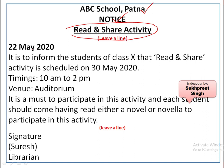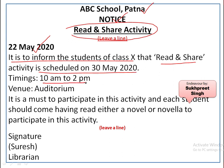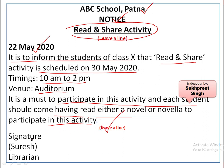Then leave a line, put the date: 22 May 2020. The content reads: It is to inform the students of class 10 that Read and Share Activity is scheduled on 30th May 2020, timings 10 a.m. to 2 p.m., venue: auditorium. It is a must to participate in this activity and each student should come having read either a novel or novella. Then leave a line, add signature, name and designation. This is how a notice is written. You can take a click of it for future reference.